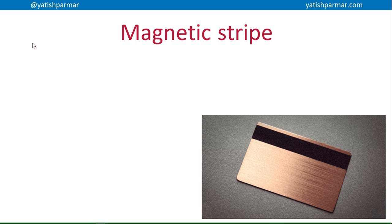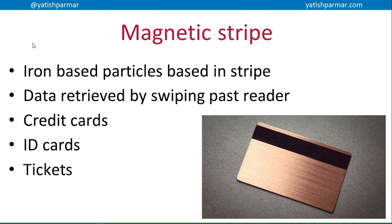Further use of magnetic material: you have a magnetic stripe on the back of a credit card or other cards, with iron-based particles in the stripe. Data is retrieved by swiping the card past a reader. You see them in credit cards, ID cards, and tickets. When you start working somewhere, for example, you might be issued a magnetic swipe ID card. The device can write data into the magnetic stripe.